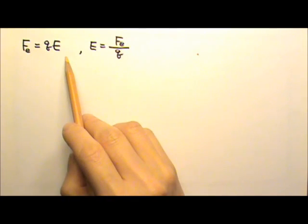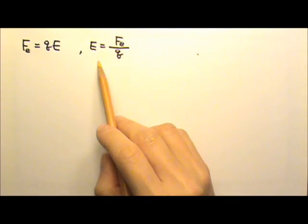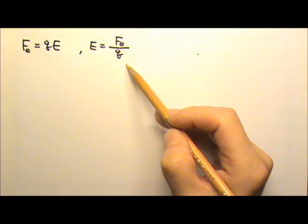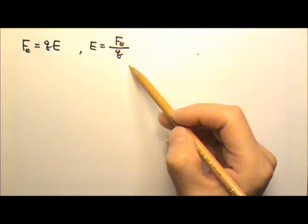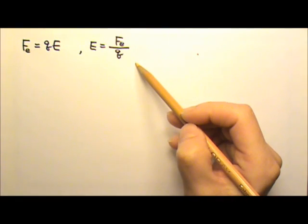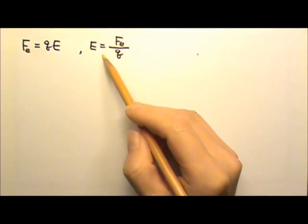Since F equals to QE, the electric field E is the electric force per unit charge. This is the definition of electric field. What do you think the unit for electric field is? It is newtons per coulomb.